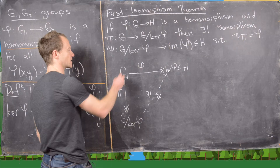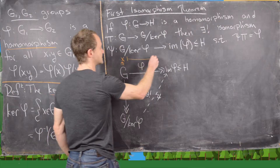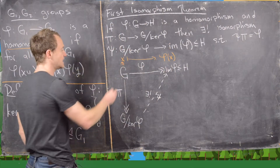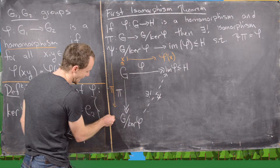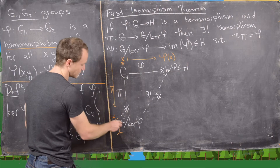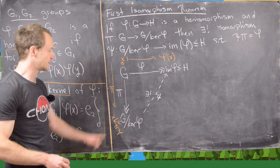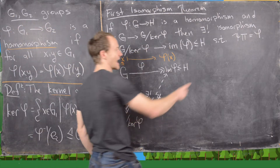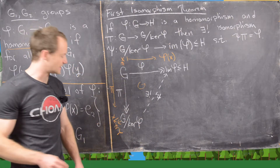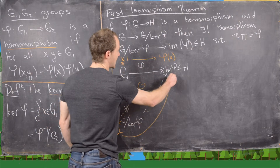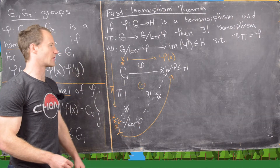Starting with x in G: phi maps x to phi of x, and pi maps x down to the coset x·ker(phi). Elements of G mod ker(phi) are given by such cosets. Since we want psi∘pi = phi, this diagram must be commutative, which means psi needs to send x·ker(phi) to phi of x. That's exactly how we'll start the proof.